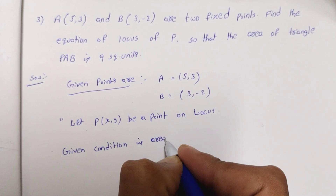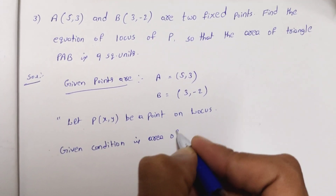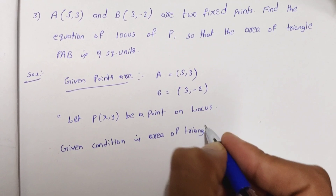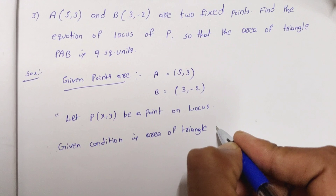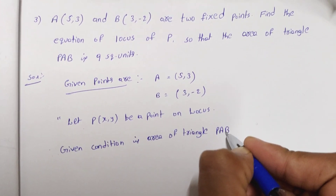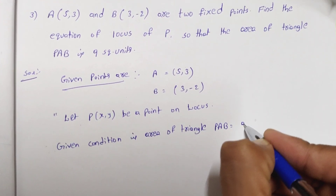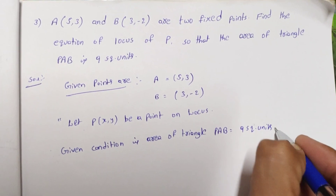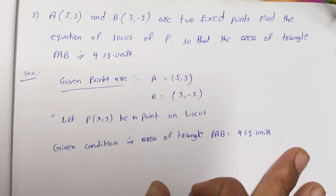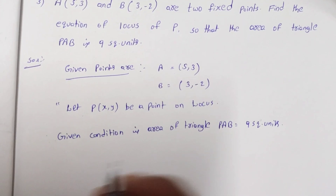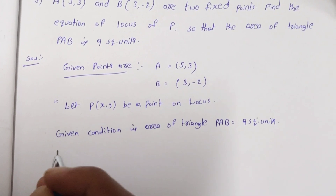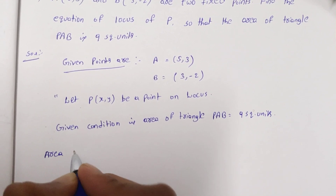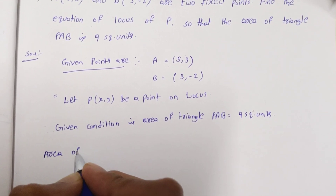The solution is easy. Area of triangle PAB is equal to 9 square units. So 9 square units — the area of triangle is formed by this formula. Very, very important.